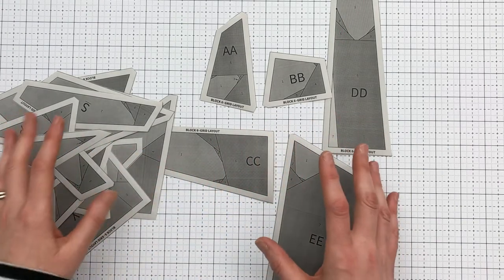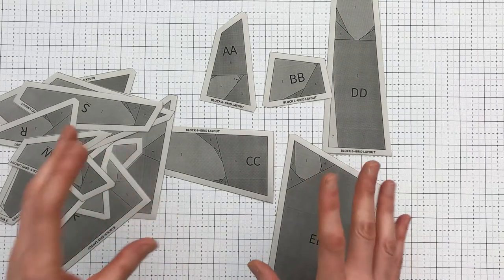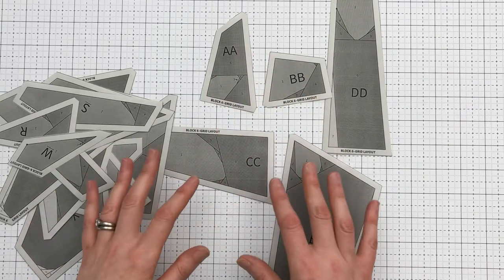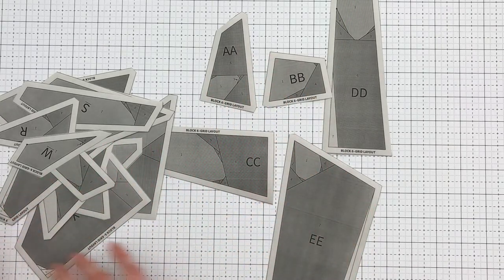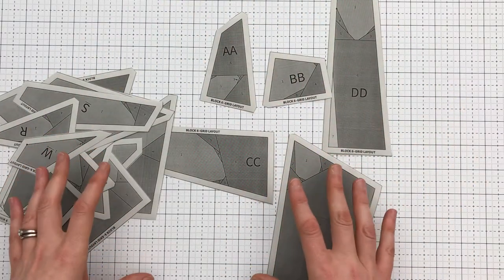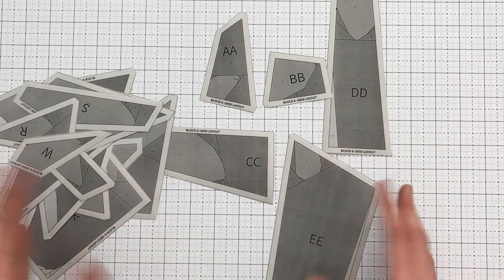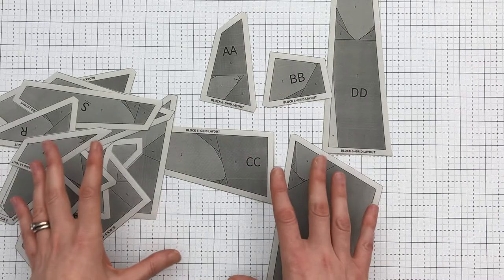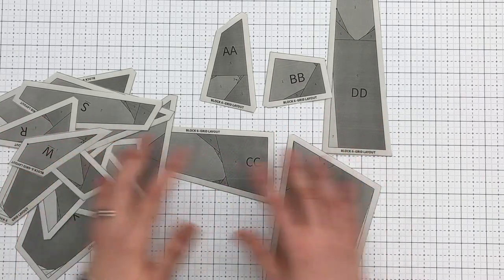How I typically work when I paper piece is instead of working just one piece at a time and filling up each of the sections, I'll go ahead and work all of the pieces at the same pace. So what this looks like for me is, first I'll cut out all my paper pieces, and then if I do any pre-cutting of fabric, I'll do all of that.